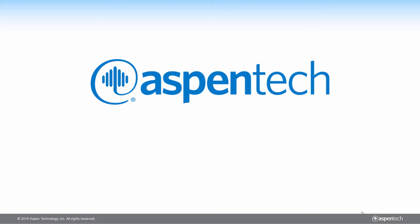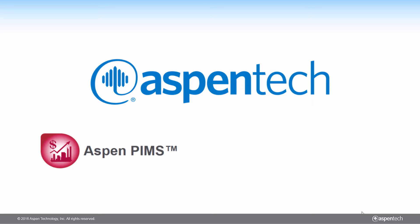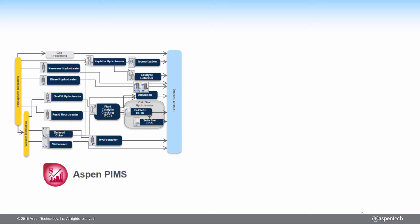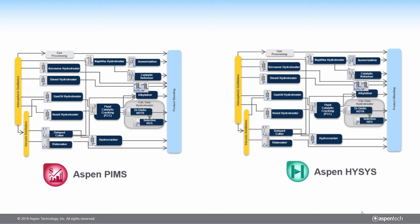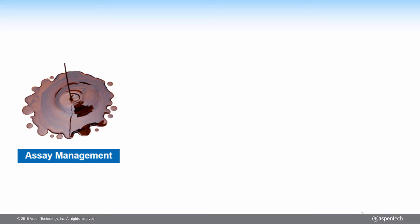Aspen Technology offers an innovative approach for developing a refinery-wide process model by leveraging its planning software Aspen PIMS and its rigorous process simulation software Aspen HySys. The approach is to take the planning model of the refinery in Aspen PIMS and use it to develop a refinery-wide process model in Aspen HySys. This is possible since Aspen PIMS and Aspen HySys share the same assay management tool, which makes it easy to transfer assay data between the two.